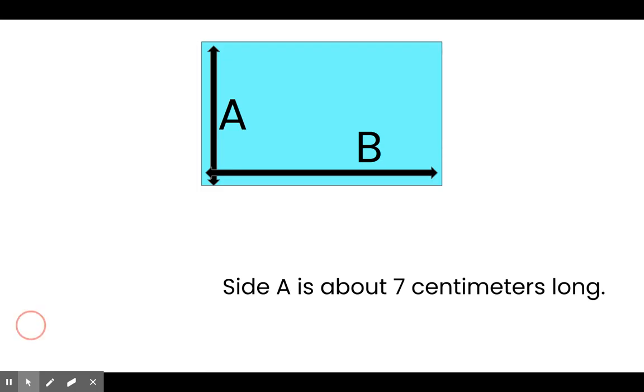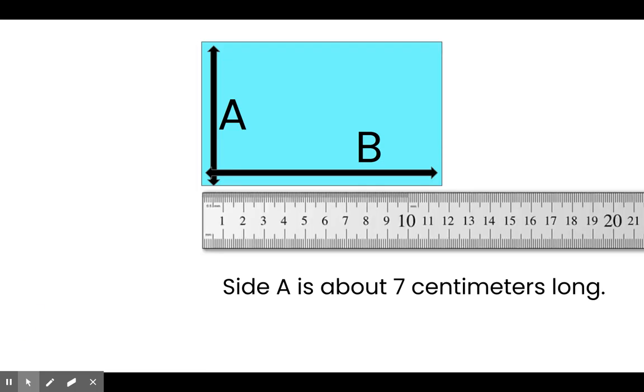Now, we need to move our centimeter ruler over and measure side B. Go ahead. Take a look. How long is side B of my invitation? What did you come up with? Did you say that side B is about 12 centimeters long? You're right. Side B is about 12 centimeters long.